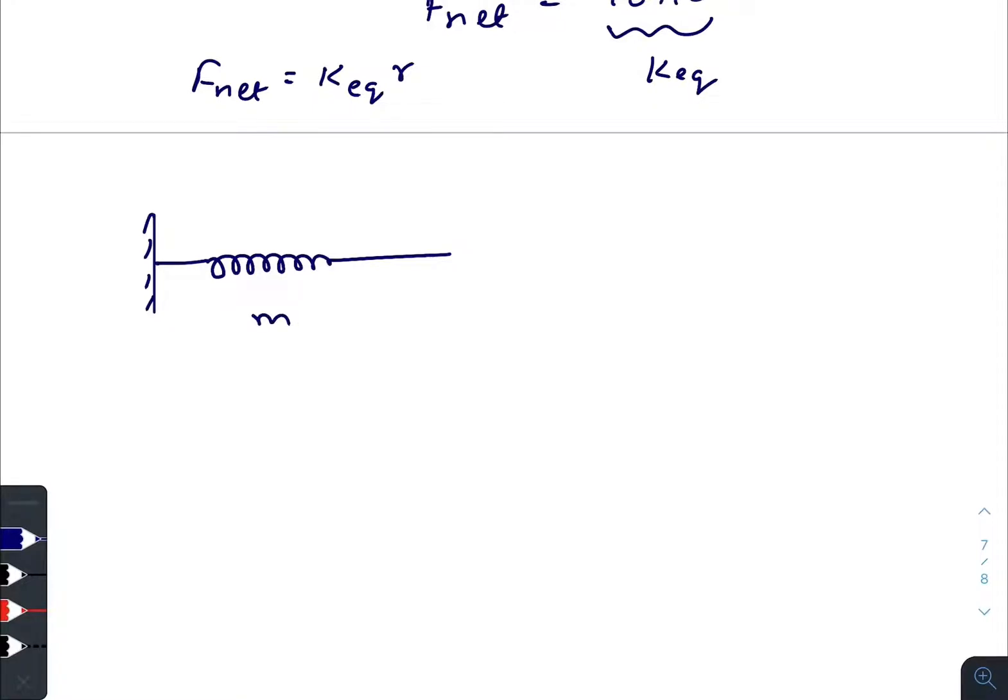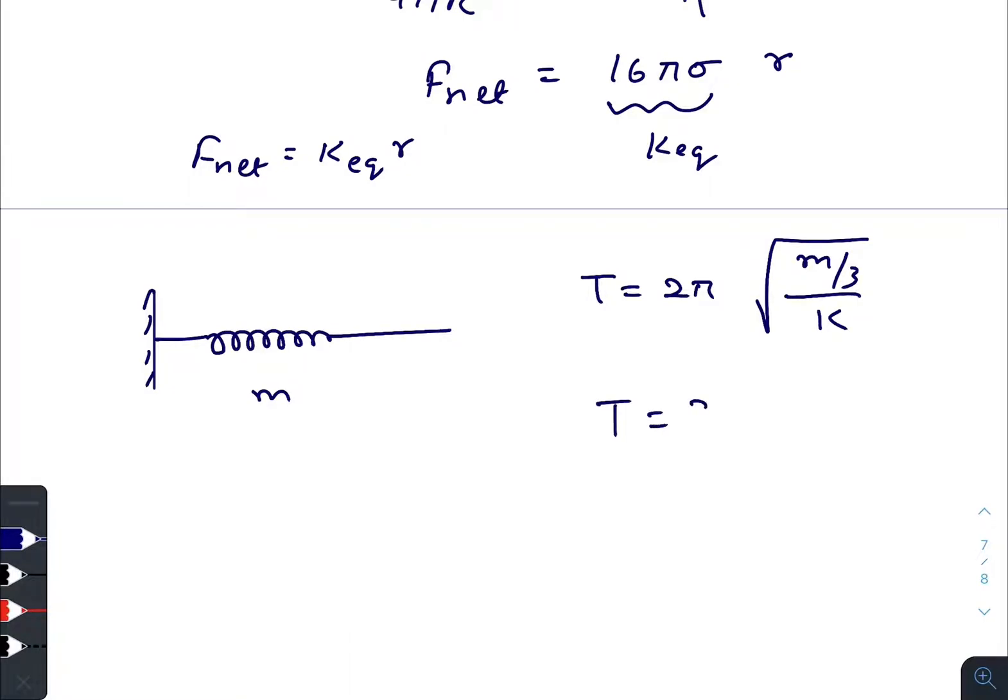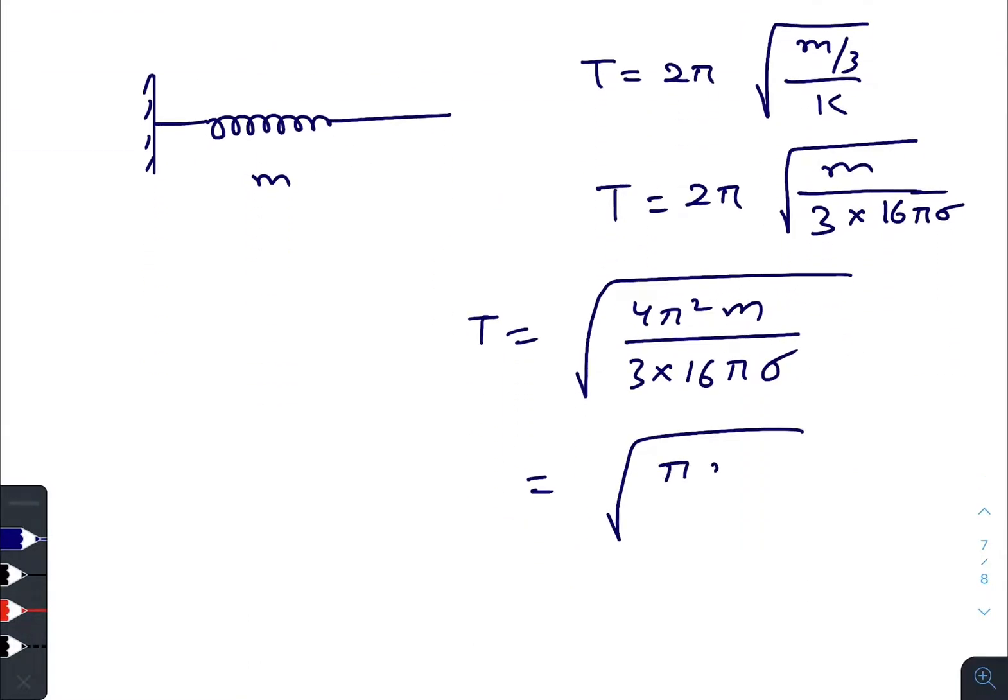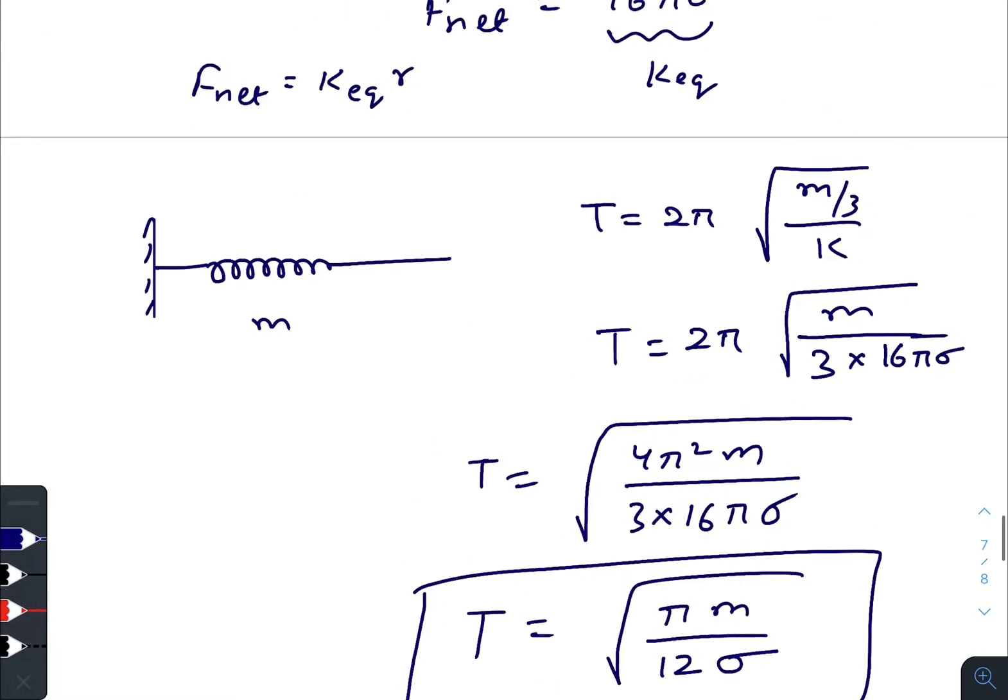We know that if a heavy spring oscillates, the time period is square root of m by 3 divided by k. Here you can take the same consideration where m is the mass of the soap bubble divided by 3 and k equivalent is 16 pi sigma. So the time period will be, taking everything inside the root, square root of pi m by 12 sigma. This will be the formula for the time period of small oscillation.